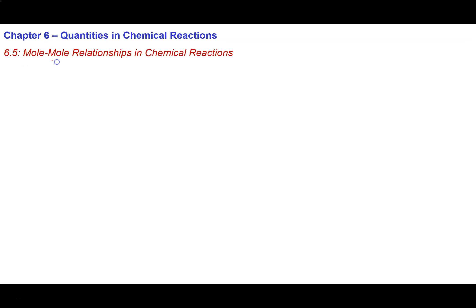So what do I mean by mole to mole relationships? Well, what I'm talking about is when I have a balanced chemical equation, something like this, where I have the same number of atoms of each type on both sides of the arrow.